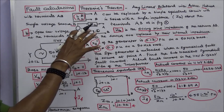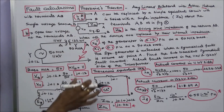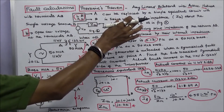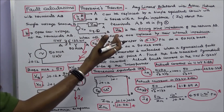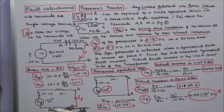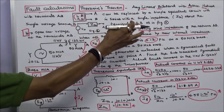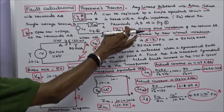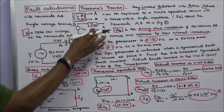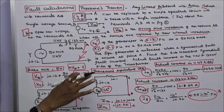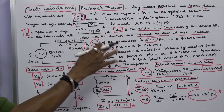This class we discuss the application of Thévenin's theorem in fault calculations. The statement of Thévenin's theorem is: any linear bilateral active network with terminals AB can be replaced by a simple equivalent circuit with a single voltage source V0 in series with a single impedance Z-Thévenin about the terminals AB, as in figure 2. Here V0 is the open circuit voltage at terminals AB, and Z-Thévenin is the driving point impedance of the network AB when all sources are replaced by their internal impedance.